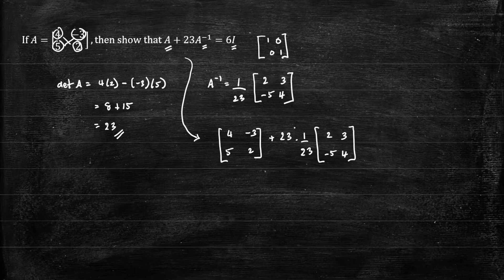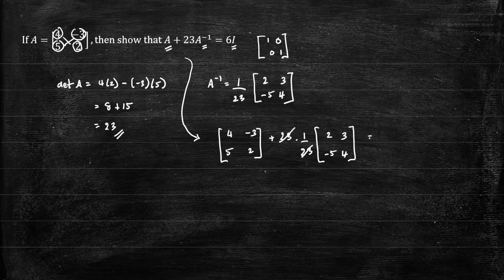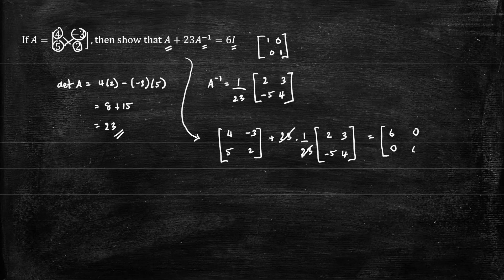We can see here that 23 will cancel. And then we just need to add those matrices. So we have 4 plus 2, which is 6. Negative 3 plus 3, which is 0. 5 plus negative 5 is 0. And 2 plus 4 is 6.